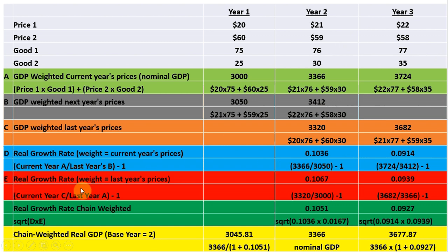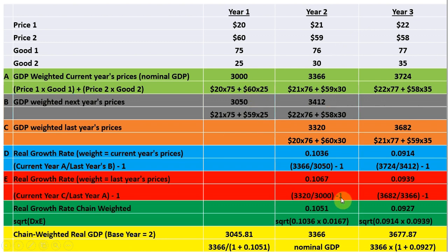Moving on to row E, we calculate another growth rate, but this time the weight is based on last year's prices. We take current year C divided by last year's A, then subtract one. For year two, that's 3,320 divided by 3,000 minus one, giving 10.67%. For year three, we take current year C of 3,682 divided by last year's A of 3,366, then subtract one to get the percentage change.